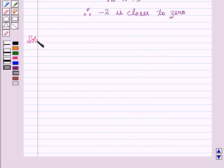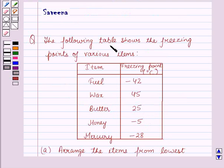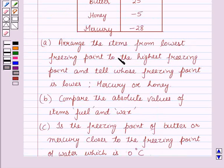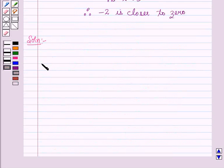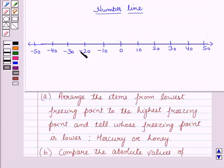Now we will start with the solution. In the question, the table showing the freezing points of various items is given to us. In part A we have to arrange the items from the lowest freezing point to the highest freezing point, and then tell whose freezing point is lower — mercury or honey. For solving part A, let us construct a number line.